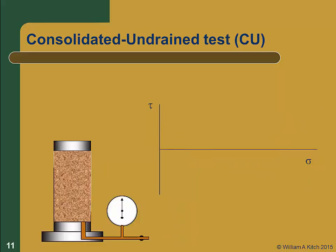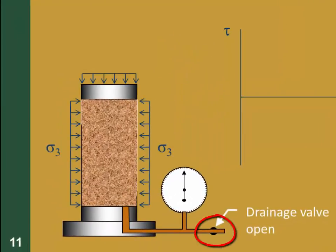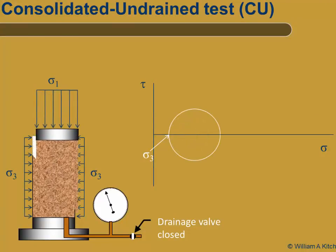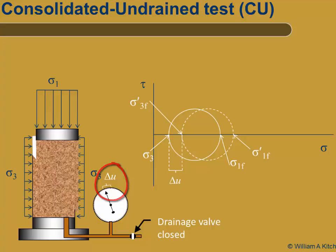Let's look at our final test, the CU test or consolidated undrained test. The drainage valve is open while the confining stress is applied and remains open until the soil is consolidated and all pore pressures are dissipated. The drainage valve is then closed, creating an undrained condition for the shear phase, and we measure any excess pore pressures generated during shear. The vertical stress is increased until the soil fails. Since we are measuring pore pressures, we know the change in pore pressure at failure, delta U. Knowing both total stresses and pore pressure at failure, we can compute the effective stresses and plot the effective stress Mohr circle shown with dashed lines. This circle is offset from the total stress circle by a value of delta U; in this case a negative excess pore pressure shifts the Mohr circle to the right.